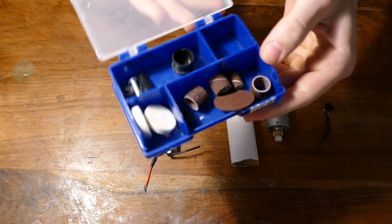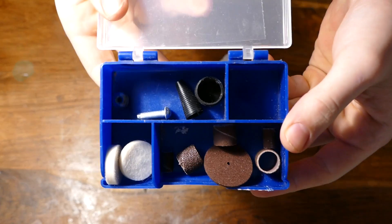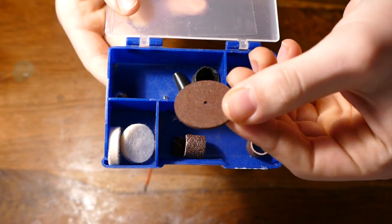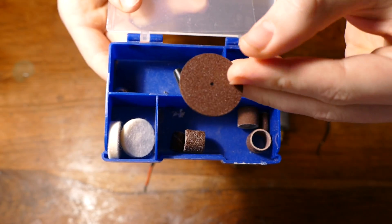Lastly, you're going to need some Dremel bits. I already had these, but you can make your own by cutting a circle out of a piece of sandpaper. Alright, let's get started.